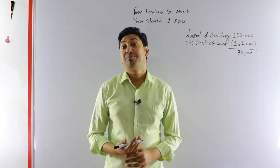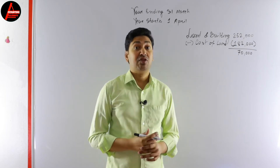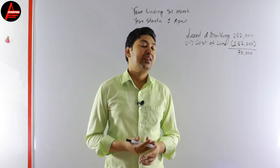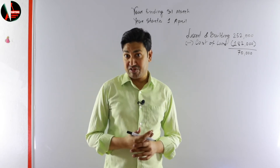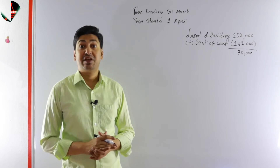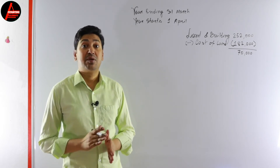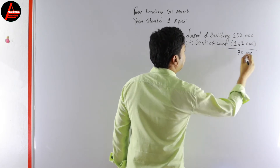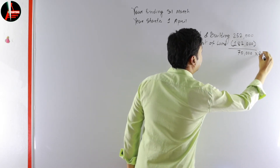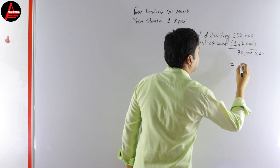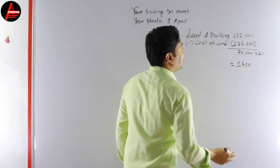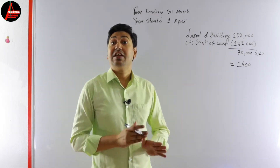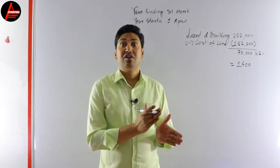Now we have to calculate the depreciation. We saw in the question that we have to apply the straight-line method. The formula for straight-line method is: cost multiplied by rate of depreciation. We do not subtract the accumulated depreciation here — whatever the cost price is, we just multiply by the rate. So the cost of building is $70,000. Multiply by 2% and the depreciation is $1,400. The key point of the straight-line method is that you multiply the rate of depreciation by the cost price.